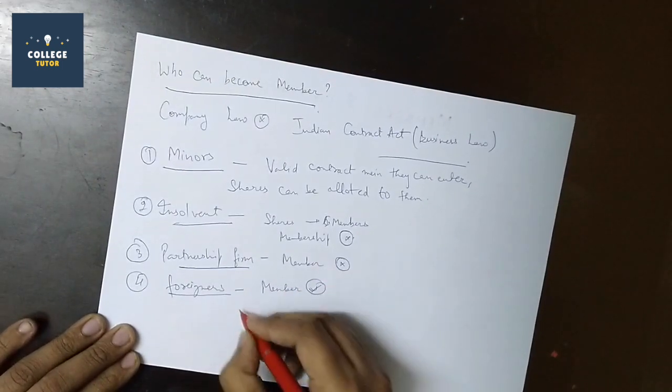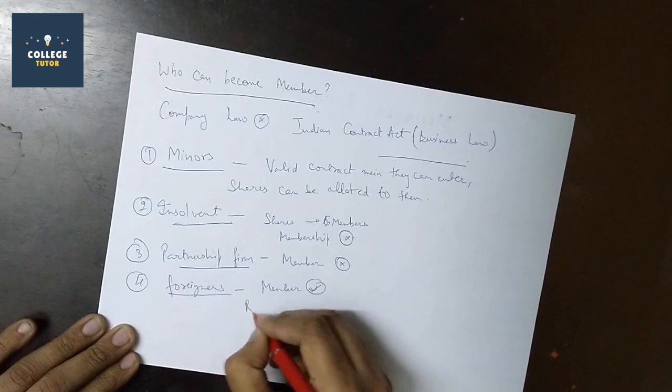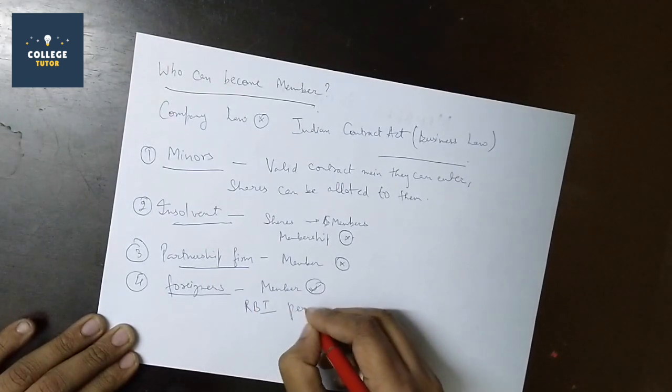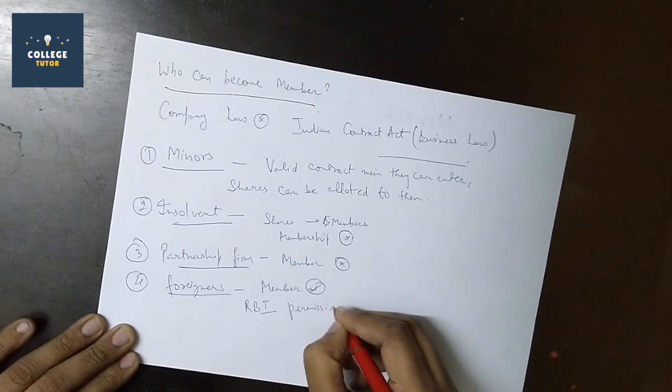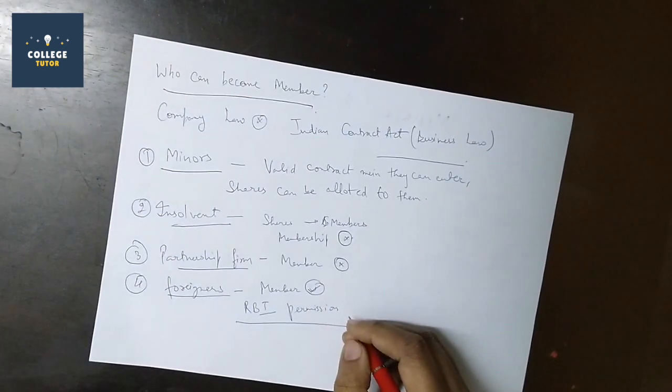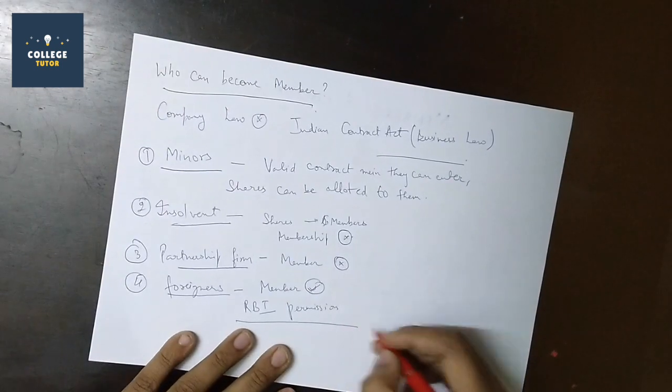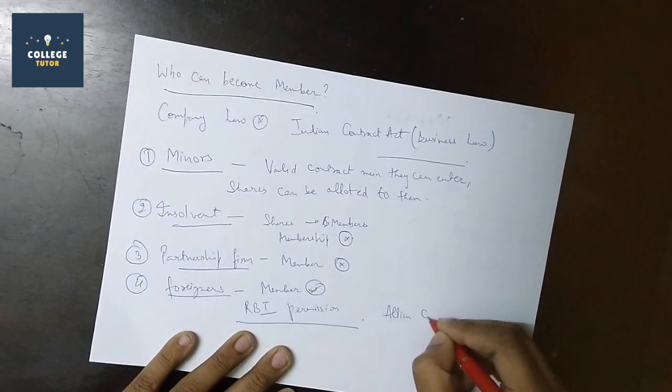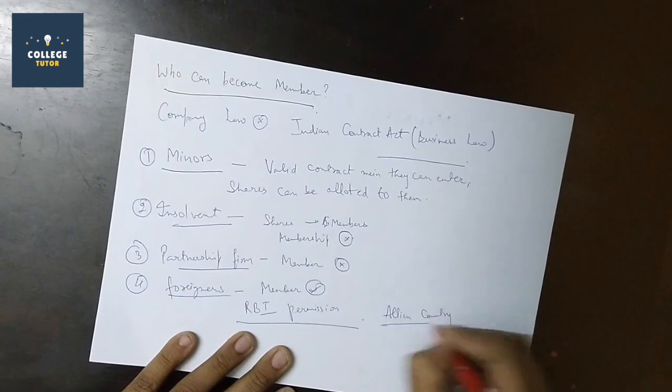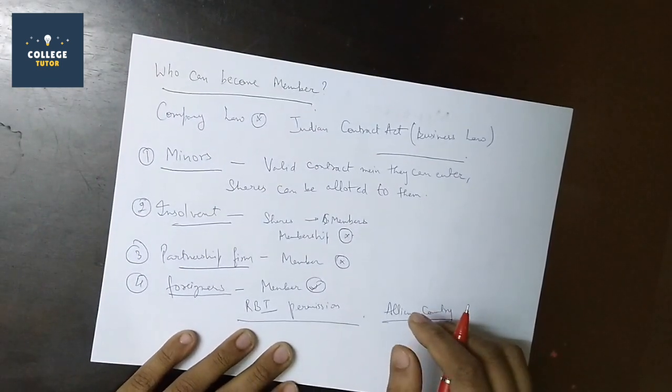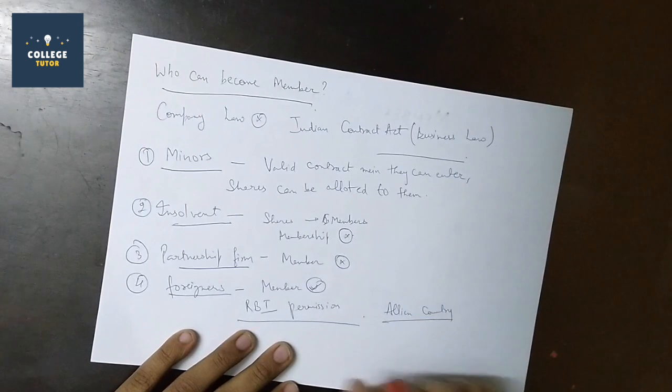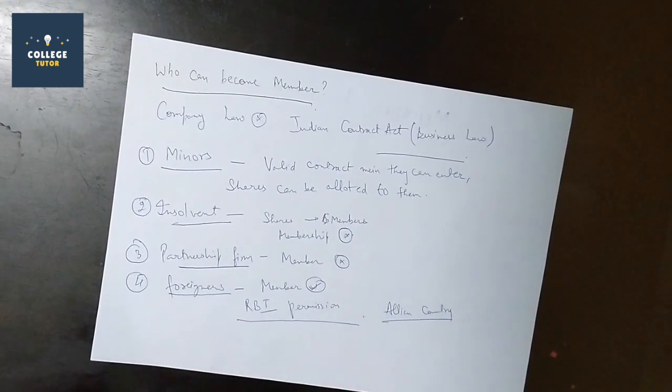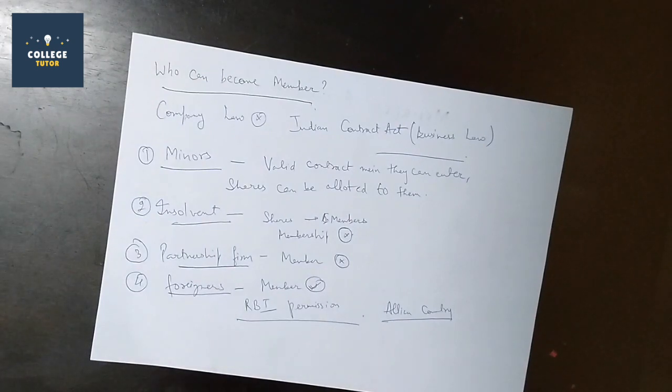Foreigners can be members, but the foreigner should not be an alien from an enemy country. Alien means there is a country with which we are going to war or fighting. Alien country nationals cannot be members, but once the war ends, they can become members.